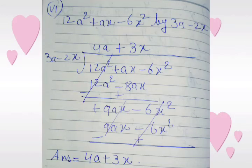We copy down minus 6x squared. We multiply 3a minus 2x with 3x and get 9ax minus 6x squared. We change the sign of the last line and both terms are cancelled. The final answer is 4a plus 3x.